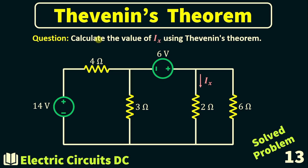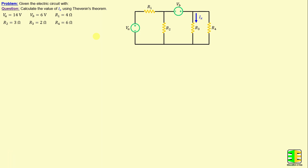Let's dive in and begin with solving problem number 13. Let's consider this network consisting of four resistors labelled R1 through R4, as well as two independent voltage sources Va and Vb. The question is to calculate the value of Ix using Thevenin's Theorem. Ix is the current through resistor R3.